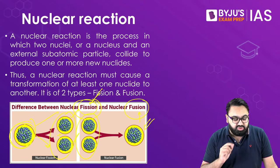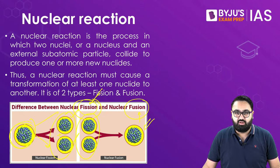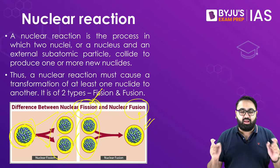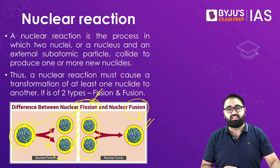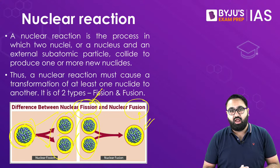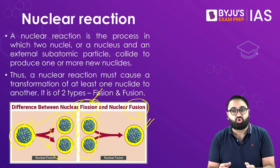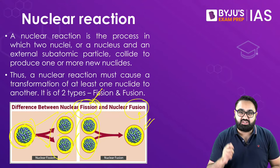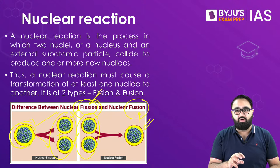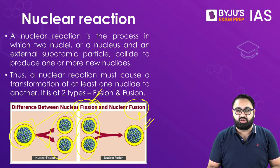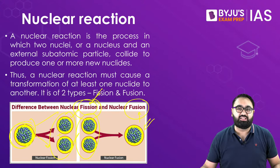For Nuclear Fusion to take place, we require extremely high temperatures and extremely high pressure. That is why, if you compare the two, you will understand that while undertaking Nuclear Fission is easier and we have achieved it on a large scale, undertaking Nuclear Fusion and converting it into something useful is extremely difficult and we are still struggling with it. The entire world is thinking that if somehow we manage to harness Nuclear Fusion, it can be the source of endless energy we require.